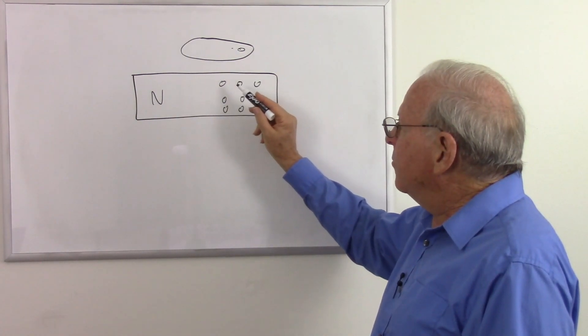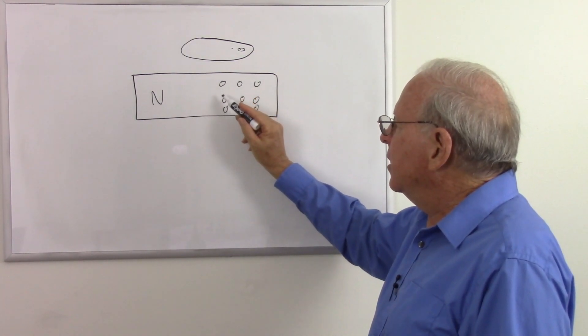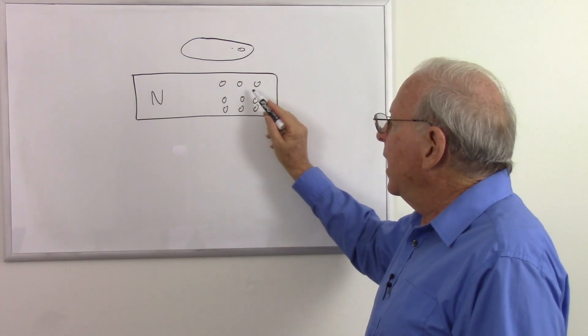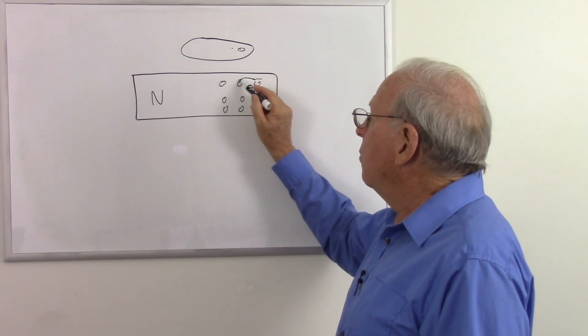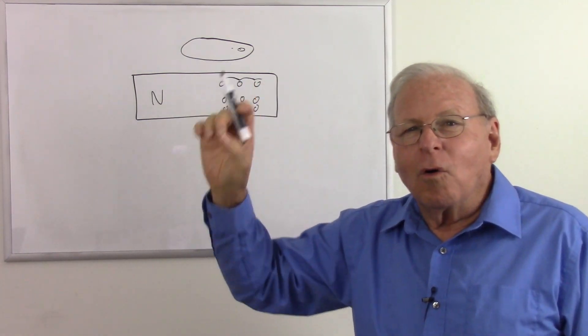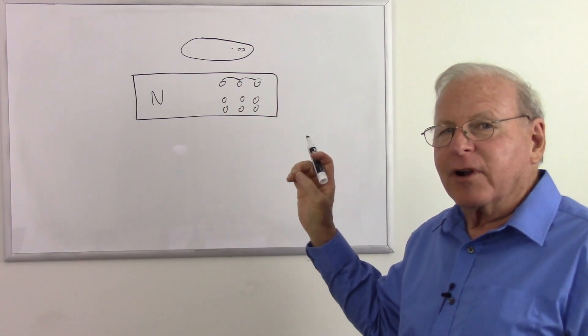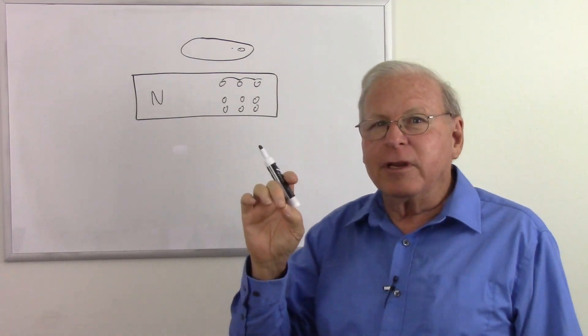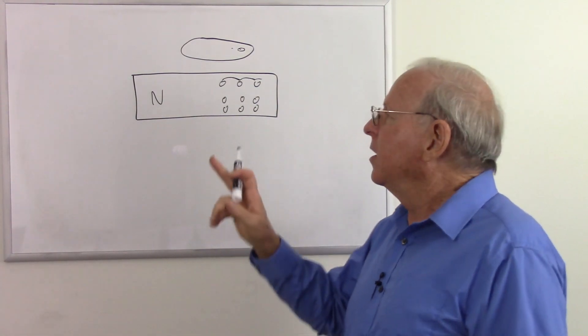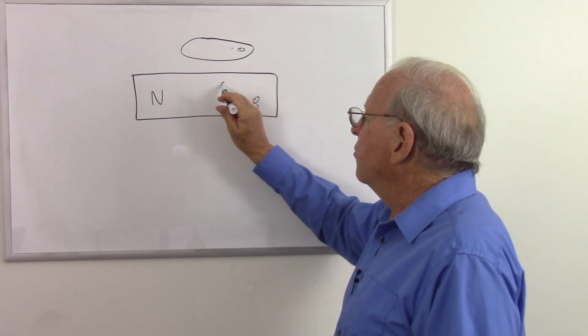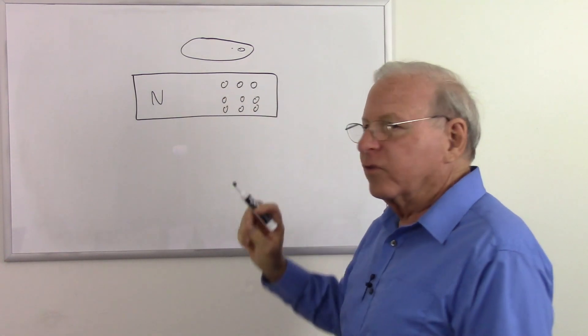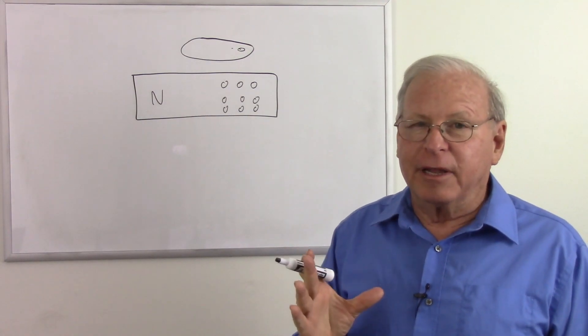And the same thing happens over on this side of the silicon where we have these holes. As these electrons move from hole to hole, it looks like the holes are moving in the opposite direction. So the holes aren't really moving, but it sure looks like they are. So as far as we are concerned on this side of the material, we consider that these holes can move, and we follow them instead of the electrons.